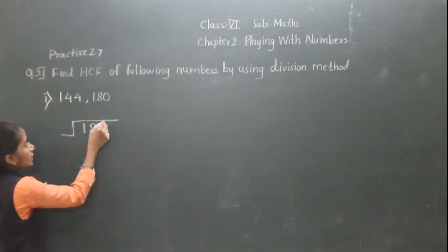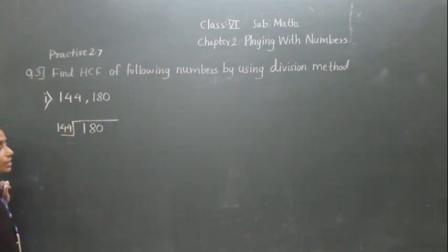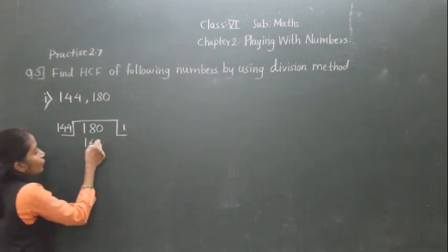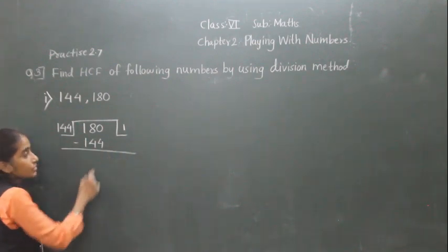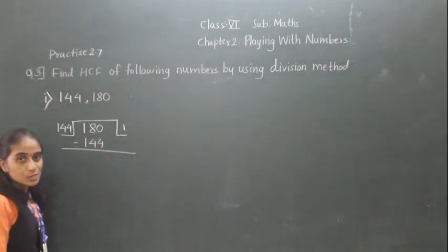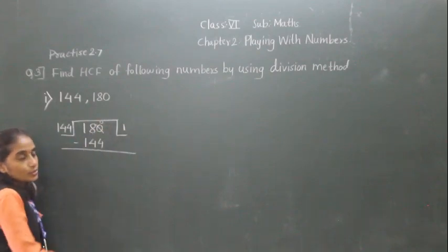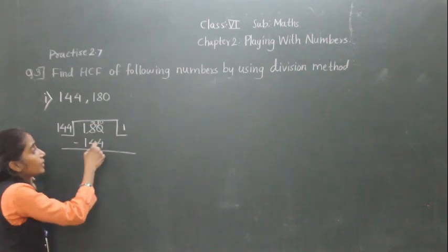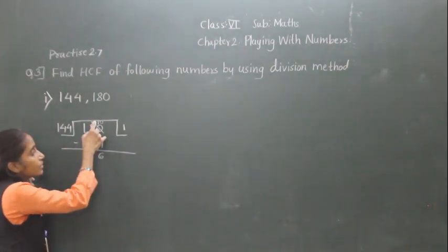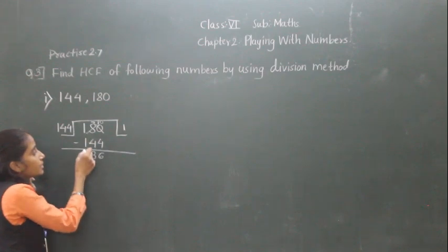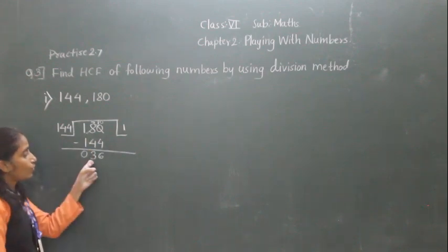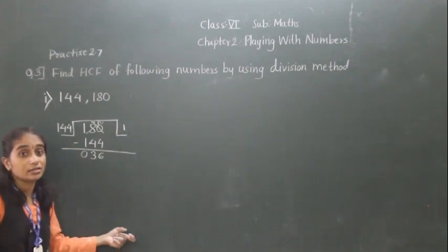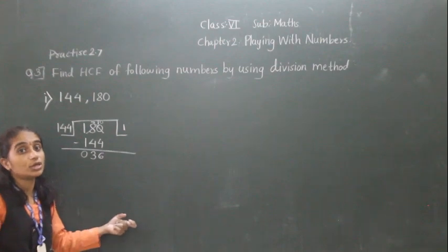We divide the greater number by the smaller number. Now, 144 ones are 144. This is the calculation: 0 minus 4 is not possible, so we borrow 1. Now 10 minus 4 is 6, 7 minus 4 is 3, 1 minus 1 is 0. Now what we got here is a remainder of 36. We need to get the remainder down to 0, so we have to continue the division.